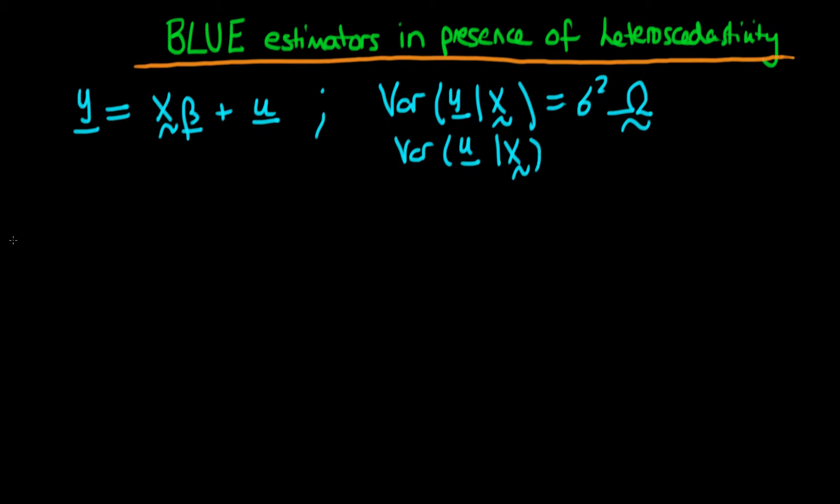Okay so we know that beta hat OLS or the expression for beta hat OLS is just equal to x prime x to the power minus 1 times x prime times y.